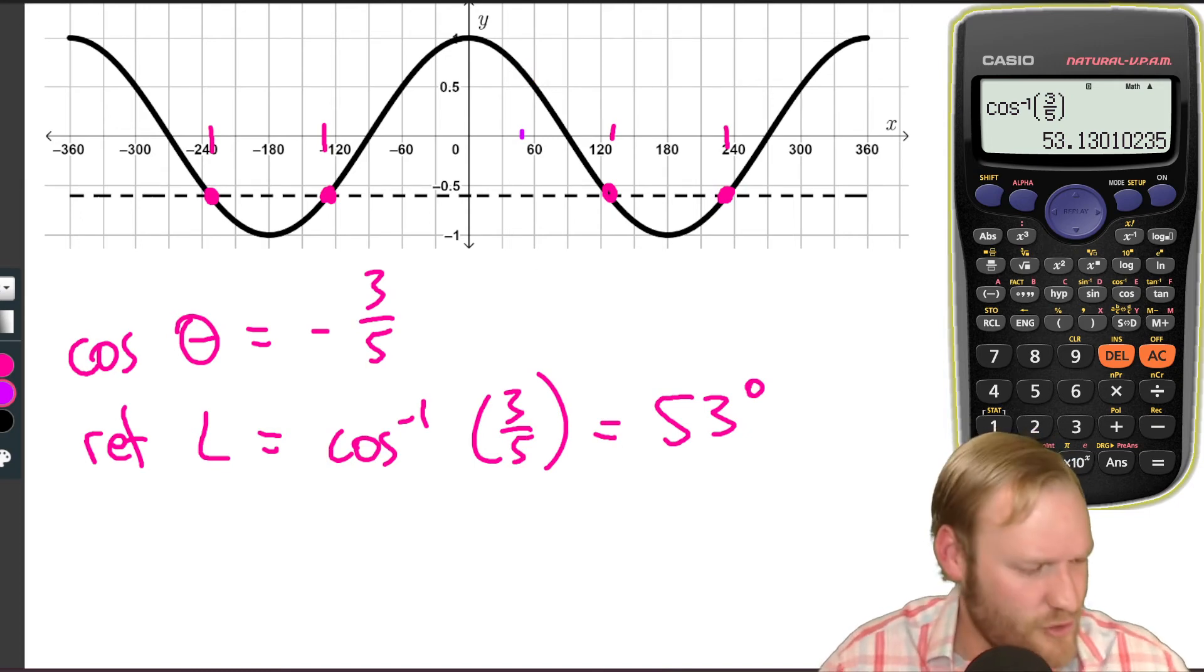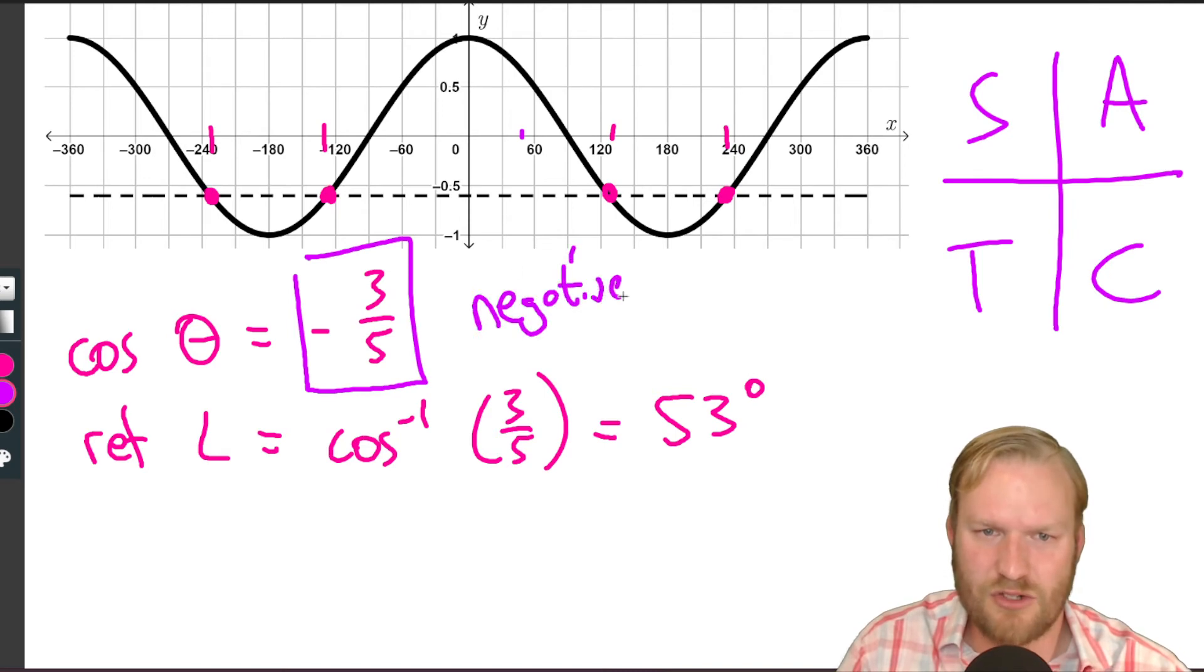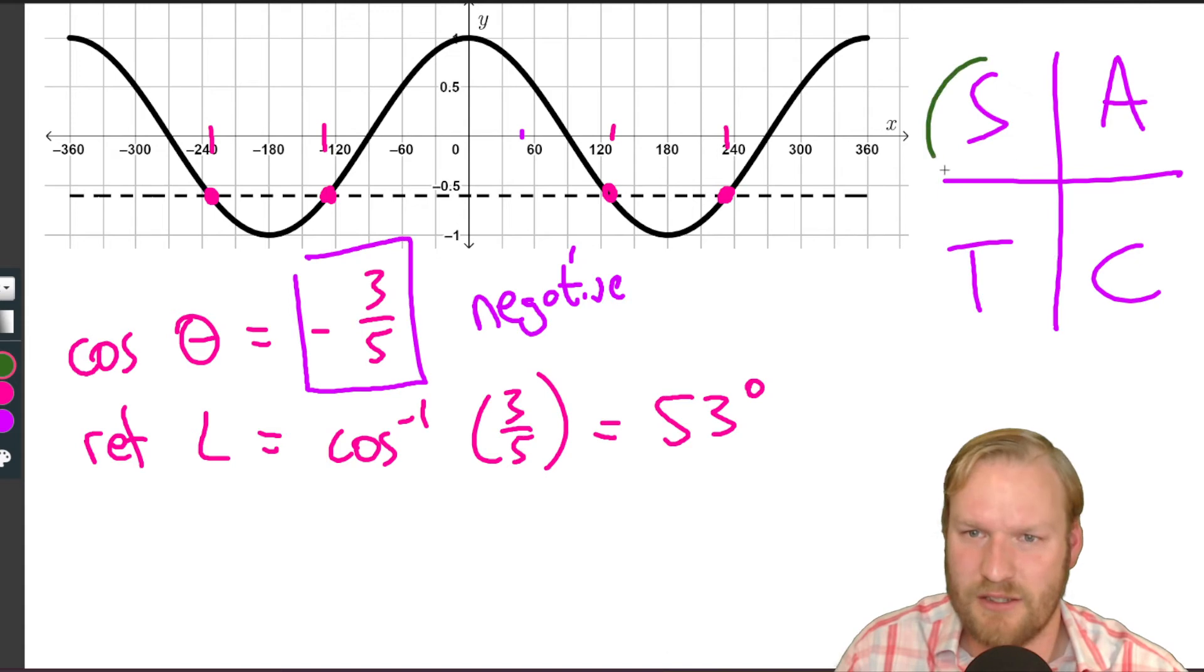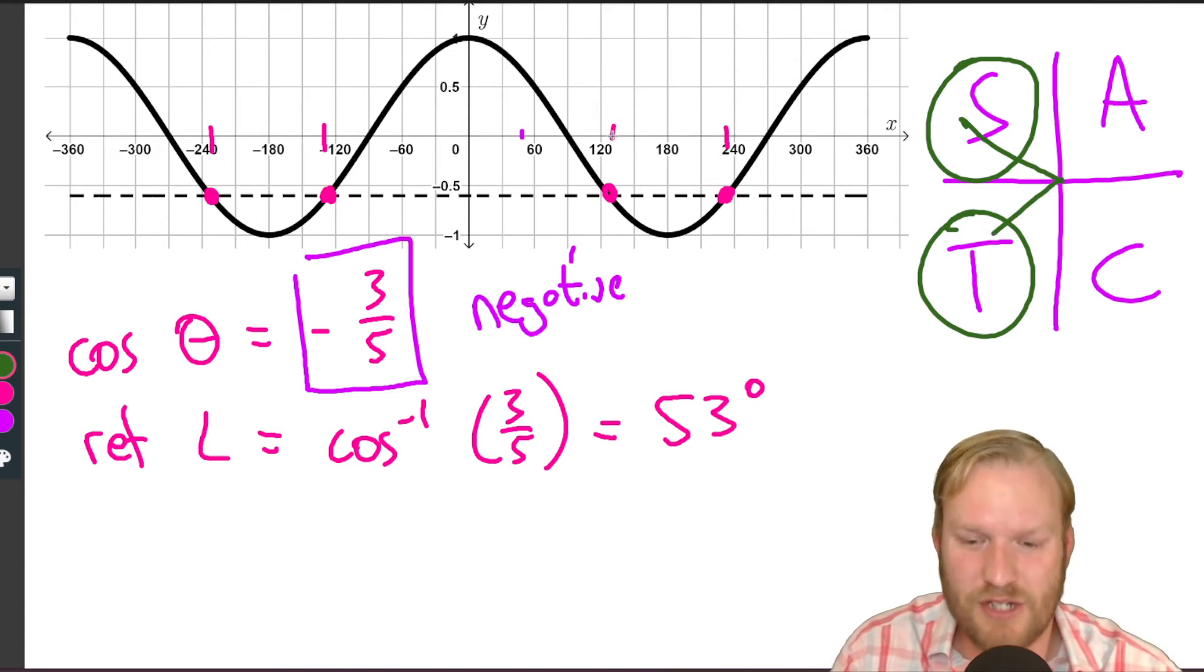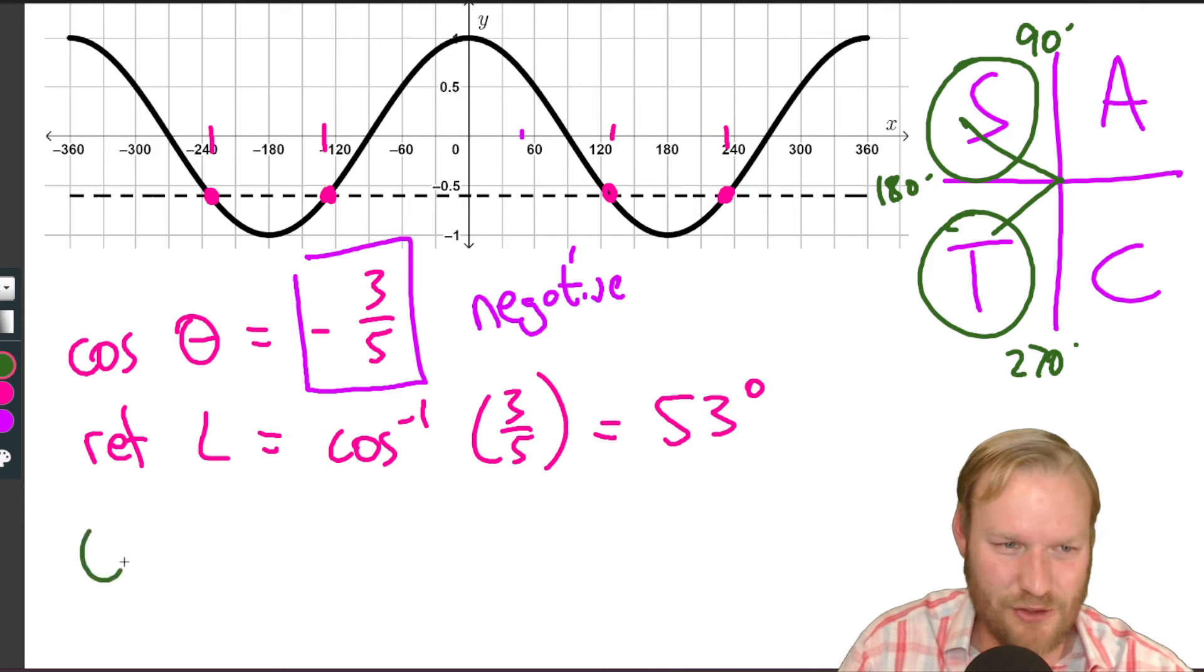Let's just confirm what's going on here. If we go back to our beloved CAST diagram, we can see that cos is negative. This tells us that cos is negative, and in which quadrants is cos negative? Well, it's in the second and the third quadrants. So in other words, our 53 needs to go there and there, and that matches our diagram quite nicely because we're expecting solutions in the second and third quadrant, between 90 and 180 for the first solution and between 180 and 270 for the second.